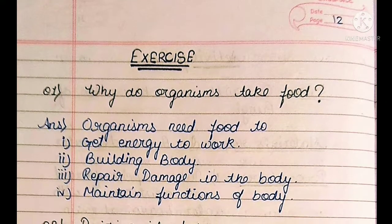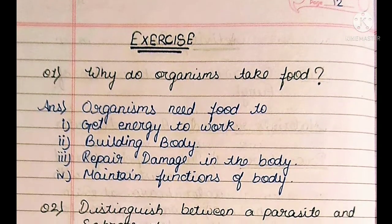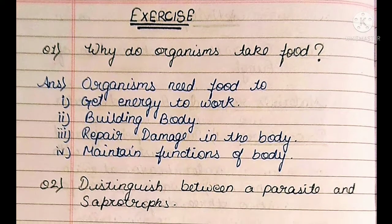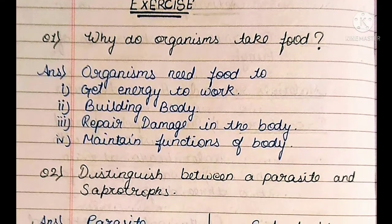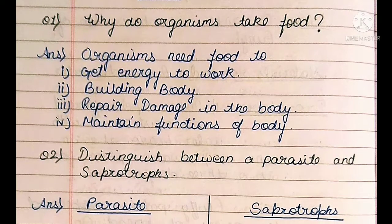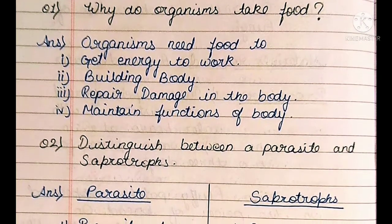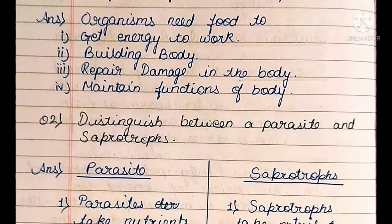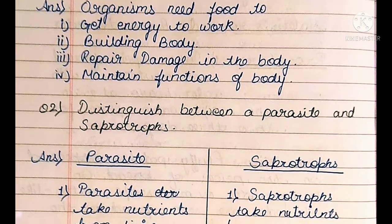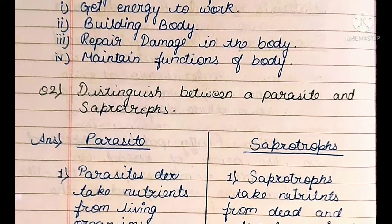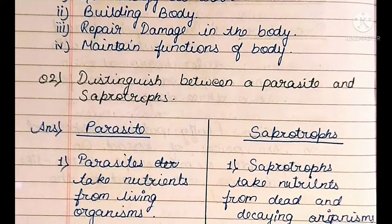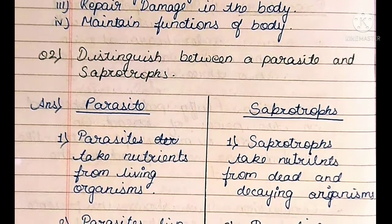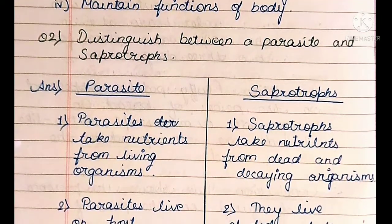Exercise — Question 1: Why do organisms take food? Answer: Organisms need food to get energy to work, build their body, repair damage in the body, and maintain functions of the body. Question 2: Distinguish between a parasite and a saprotroph. Parasites take nutrition from living organisms and live on a host. Saprotrophs take nutrition from dead and decaying organisms and live on dead and decaying matter.